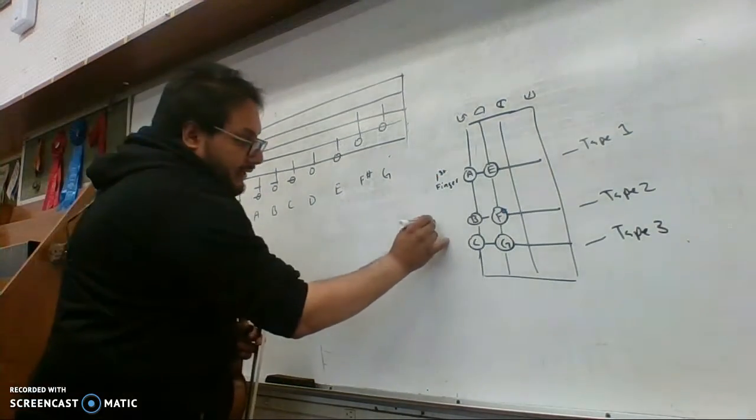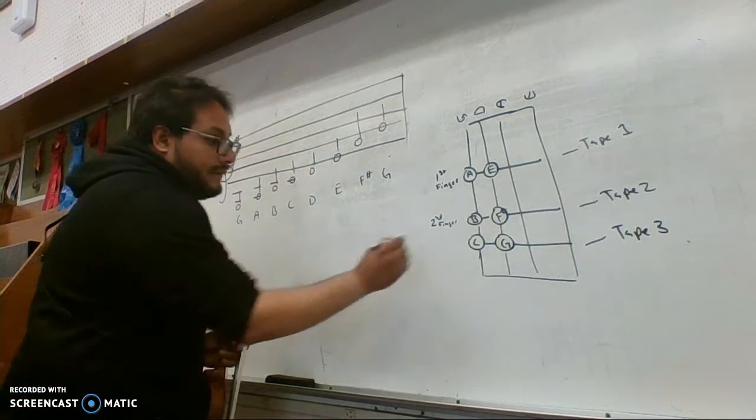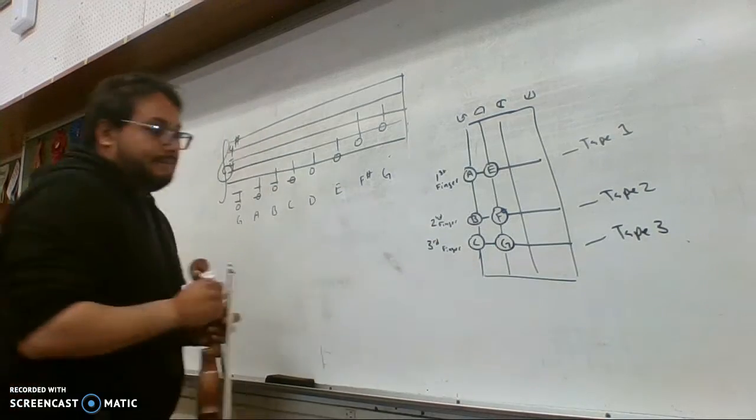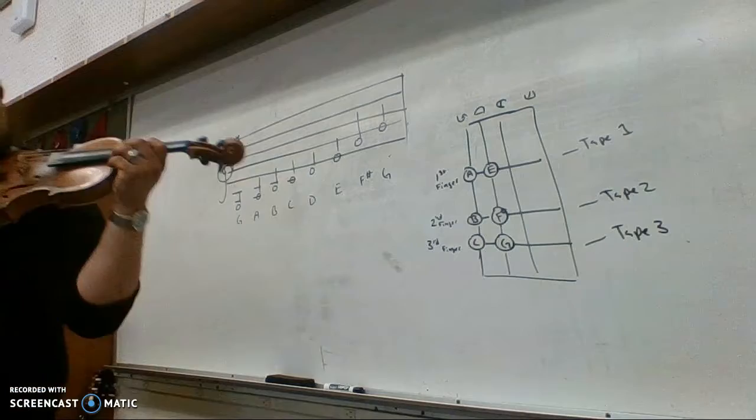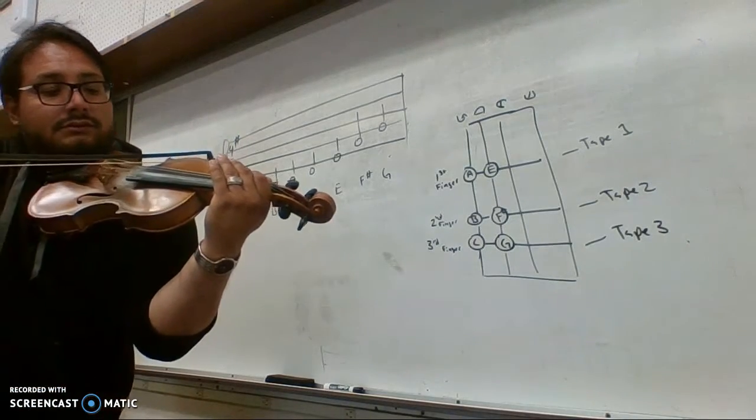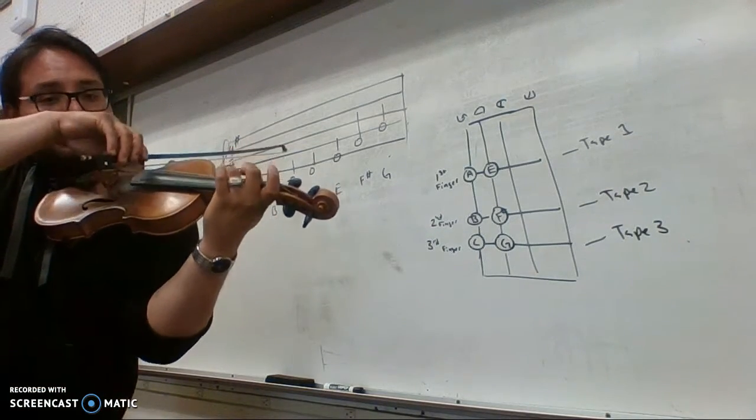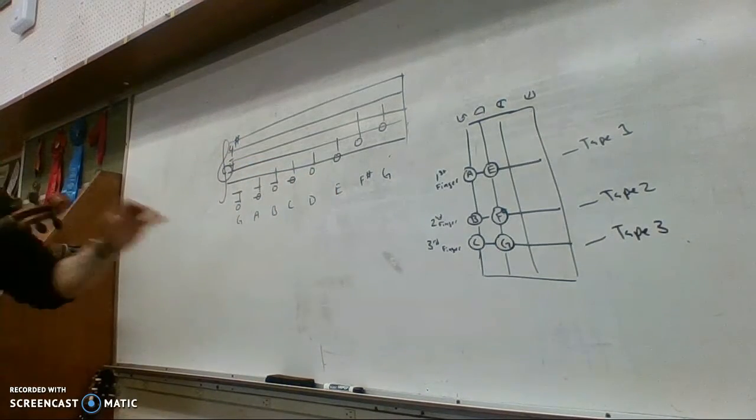After that's going to be the second finger on the B, and then the third finger. So we're starting with first finger on A, then second finger, third finger. We'll start with open G.